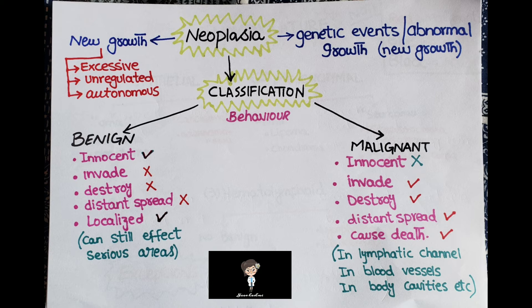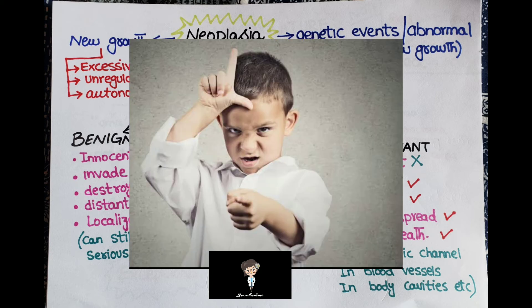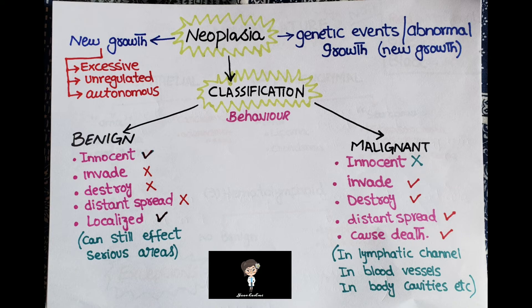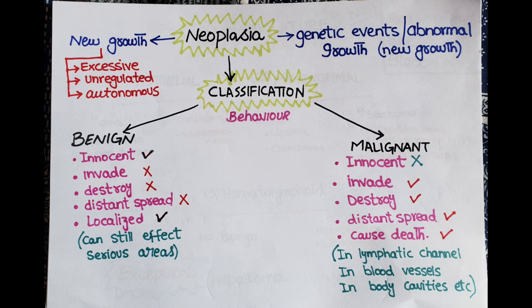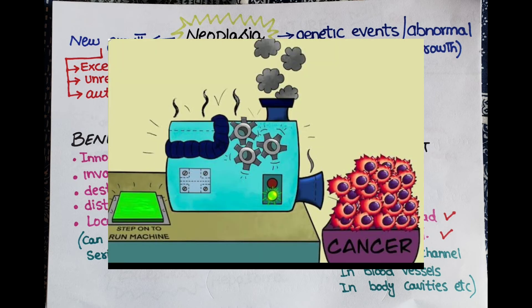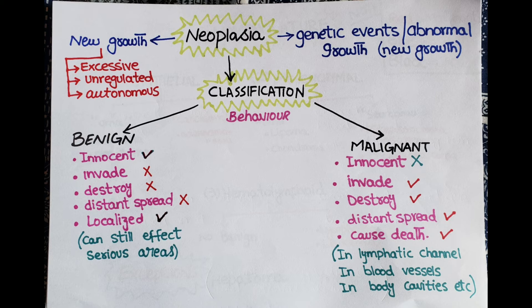Malignant tumors behave in a much worse fashion — they are not innocent and have potential to cause serious disease and death. They invade into organ cells and potentially adjacent organs, and have destructive growth patterns. They can spread into lymphatics to regional lymph nodes, into blood vessels causing distant metastasis to the liver, brain, and lungs, and within body cavities in what is called transcelomic spread.